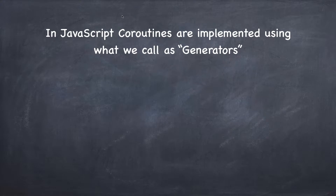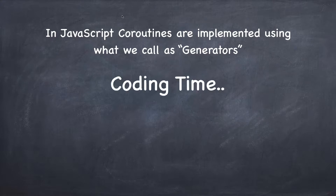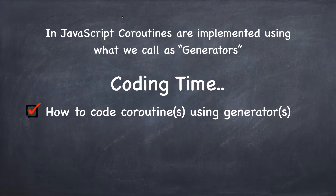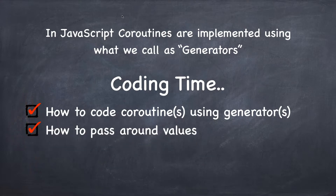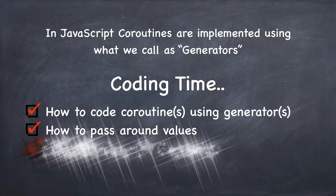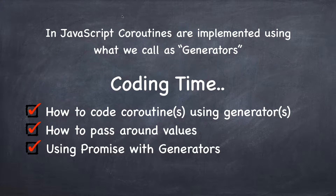In JavaScript, coroutines are implemented using what we call a generator. You'll hear the term generators more than coroutines in the beginning, but generators are a subset of coroutines. Now it's coding time. What we'll learn in this video: number one, how to code coroutines using generators; number two, how to pass around values; and number three, which you'll use most often, is using promises with generators.